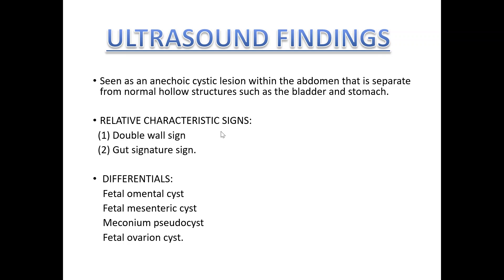On ultrasound, these are seen as an anechoic cystic lesion within the abdomen that is separate from the normal hollow structures such as the bladder and stomach. Relative characteristic signs include the double wall sign and the gut signature sign.